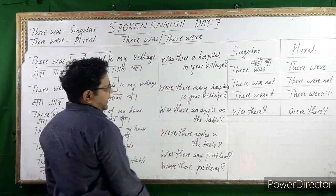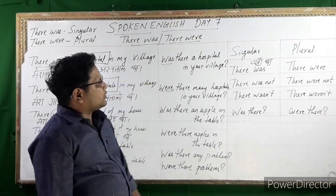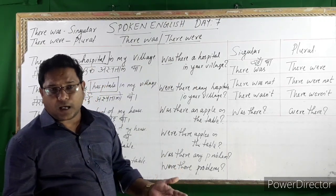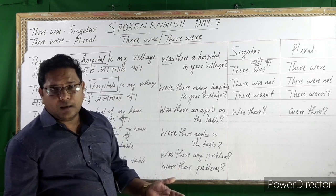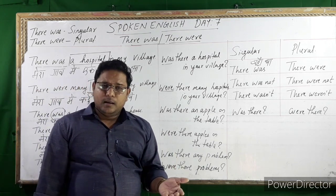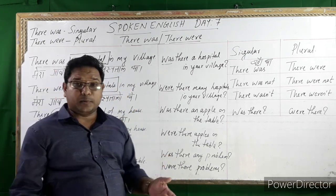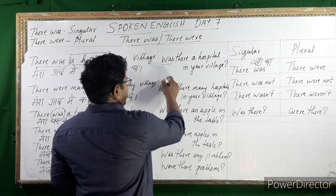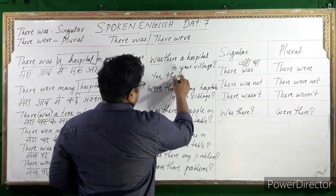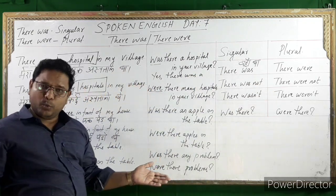To form questions, we write 'was' or 'were' at the beginning of the sentence. For example: 'Was there a hospital in your village?' — meaning, was there a hospital in your village before? The answer: Yes, there was a hospital in my village.